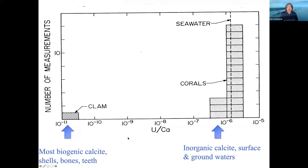A question that comes up really commonly is: why speleothems? Why is uranium-thorium appropriate to speleothems — and also corals? It turns out there's an incredible bimodal distribution of materials you might want to date at the surface. You've got seawater, and corals basically have these high uranium concentrations — high uranium-to-calcium ratios, similar to seawater. But mollusks are way down here in uranium concentration; in fact, the primary uranium concentration in a mollusk wasn't determined until we developed these really high-sensitivity mass spectrometer techniques.